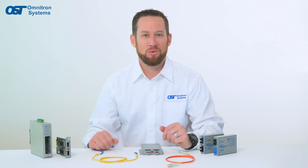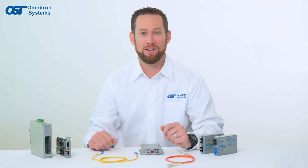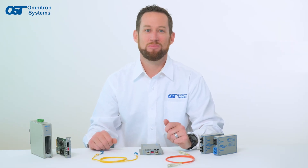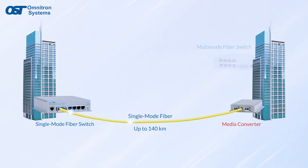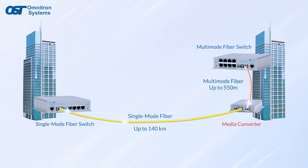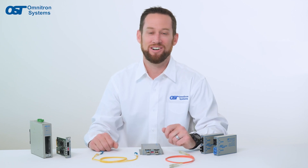So, what do you do when you need to convert a single-mode fiber to a multi-mode fiber? You use a media converter. A media converter is a device that converts a signal from one type of cable to another, allowing you to connect two devices with minimal costs that would otherwise be incompatible. To convert single-mode to multi-mode fiber, you'll need a single-mode to multi-mode media converter.